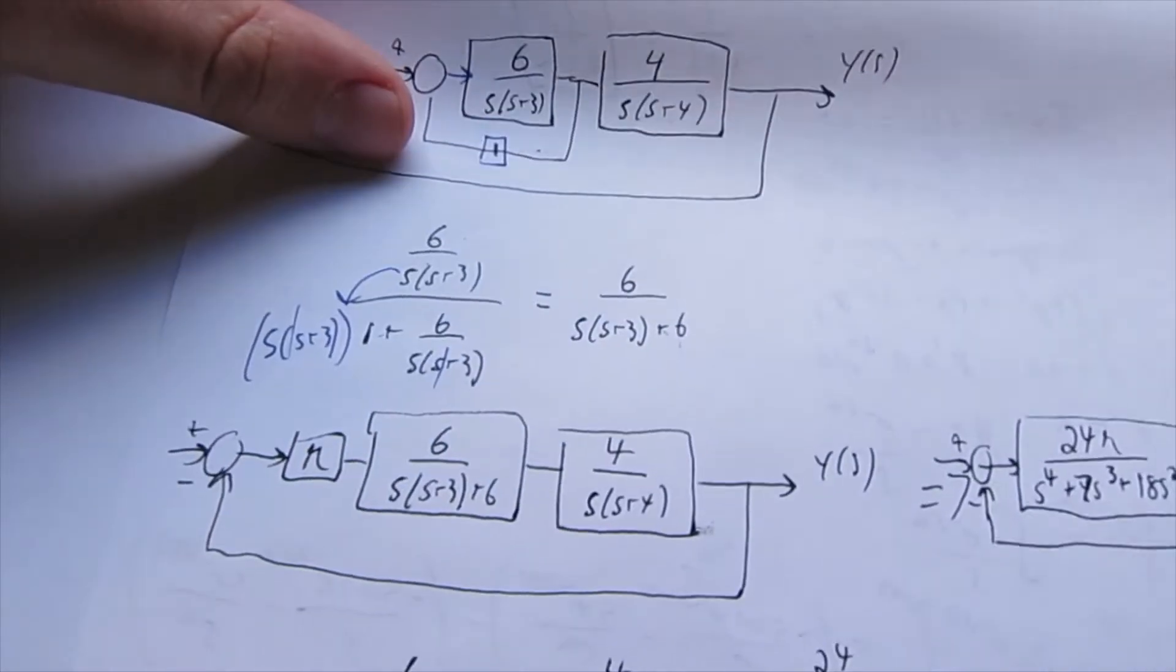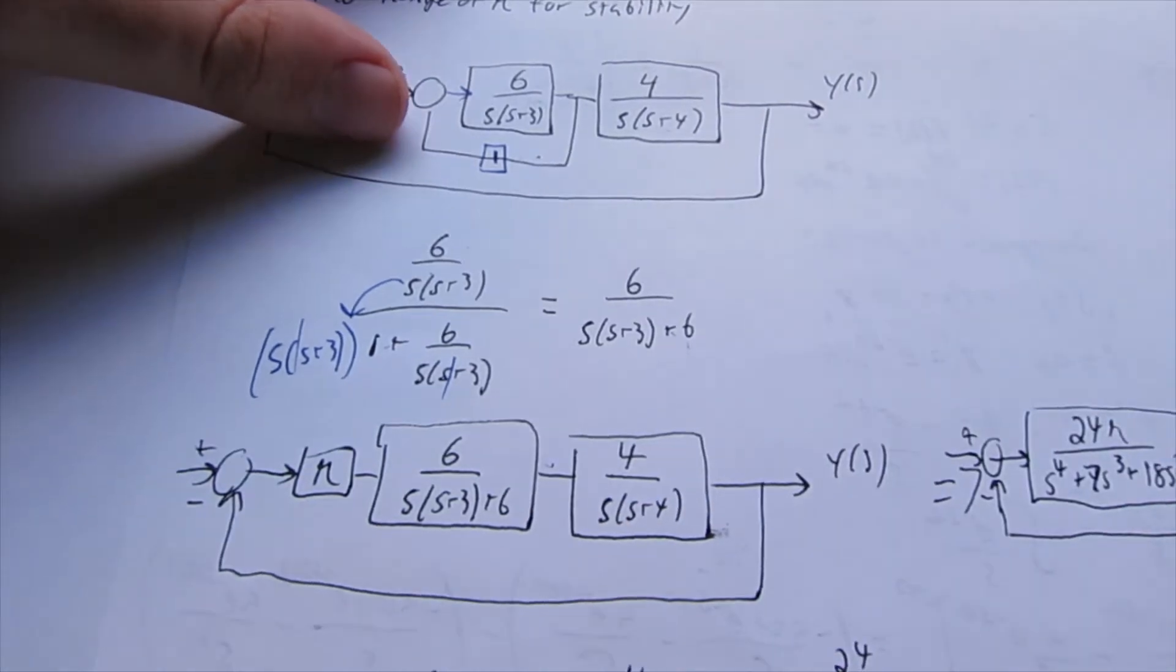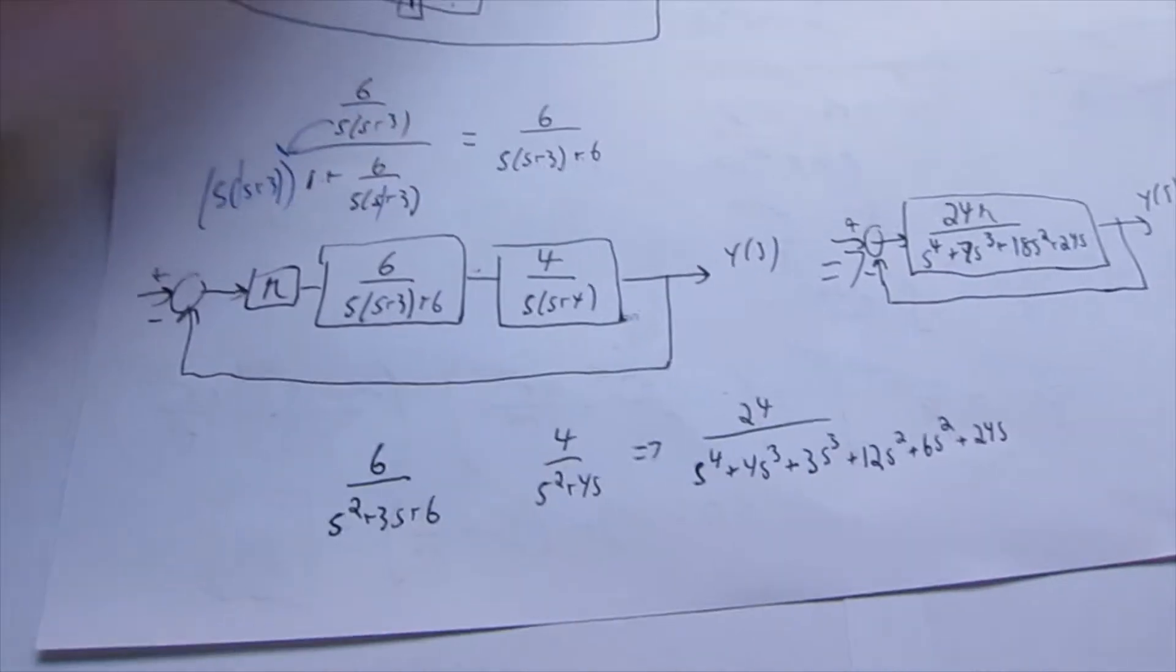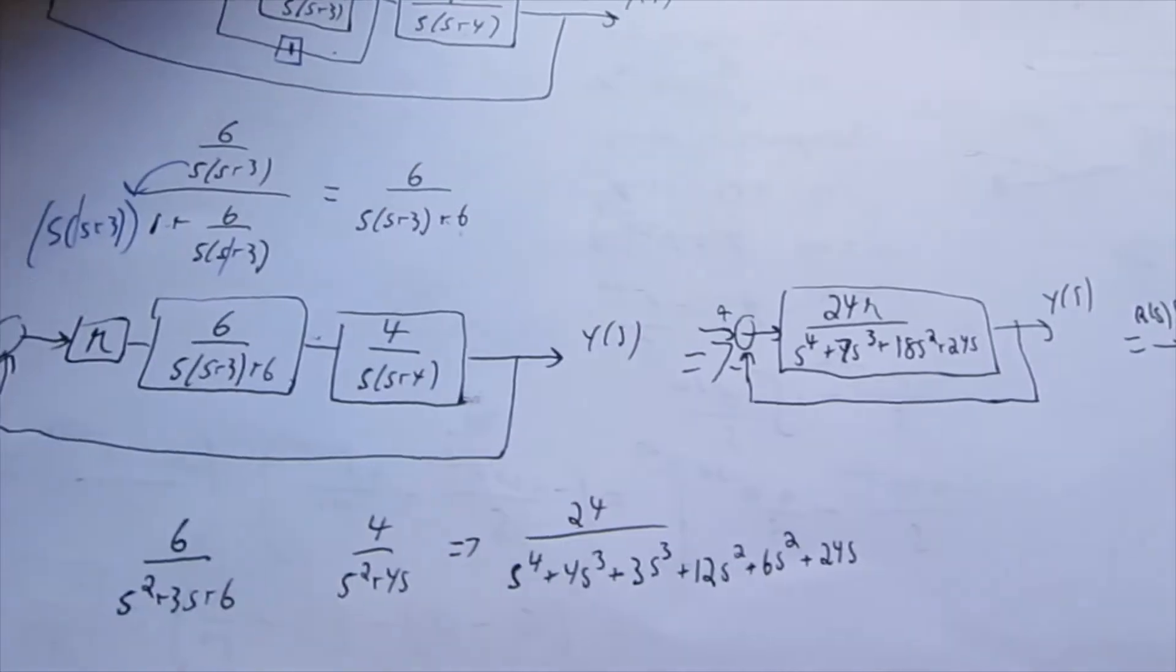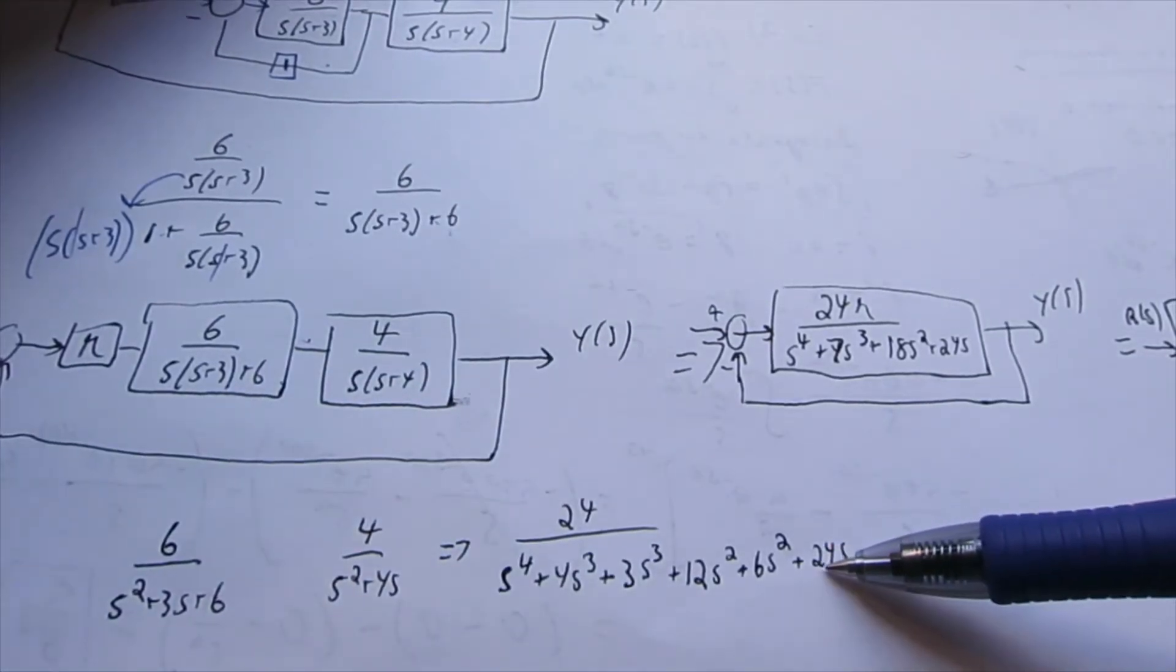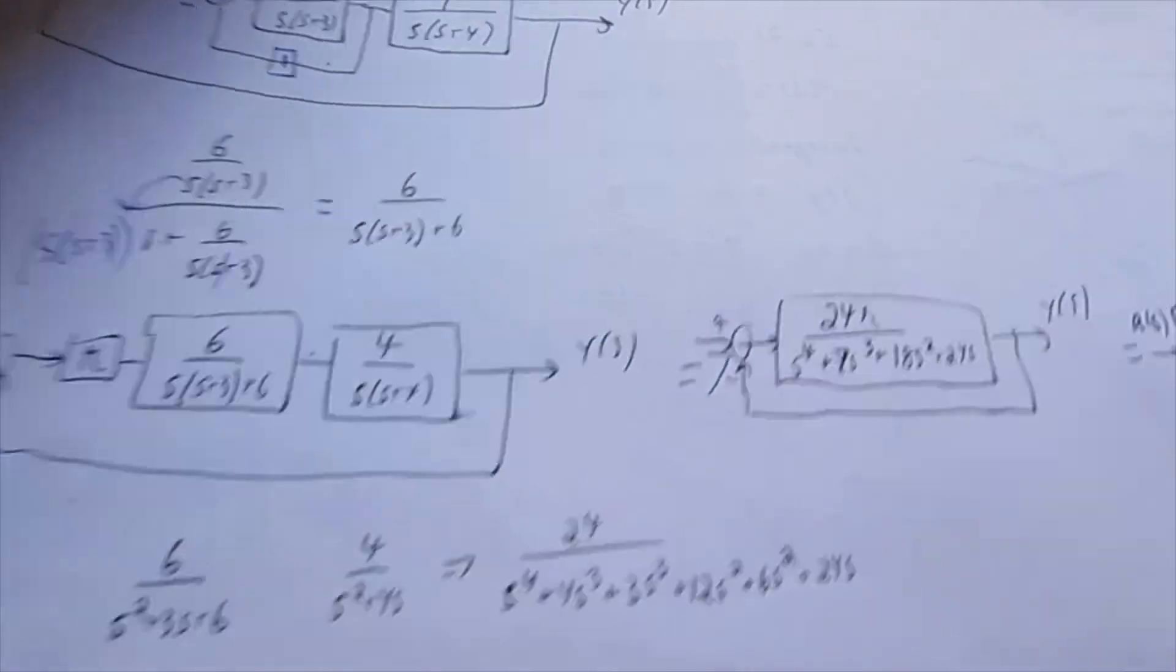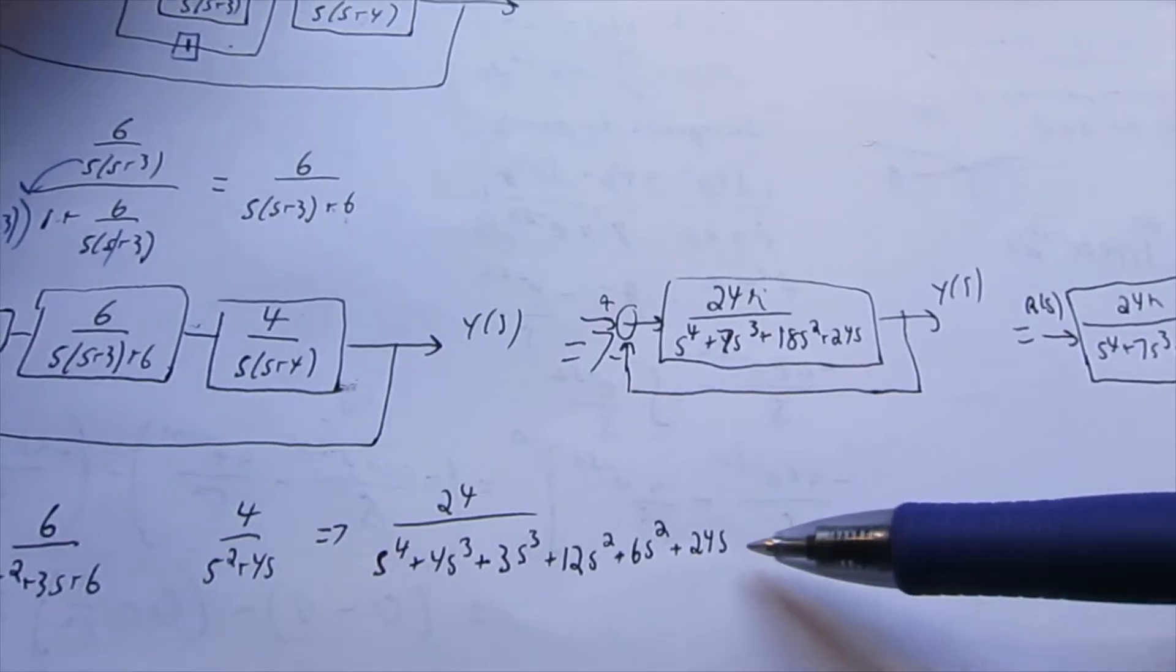And we can put that back in our block diagram reduction, and now we have another example where we can just multiply everything together. I did the math here, multiplying these two together, you get 24 over all of this, and then multiply by the K again, that gives us this 24K over our denominator.